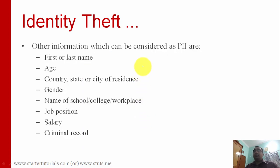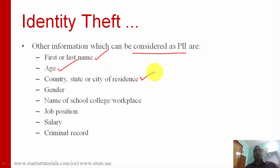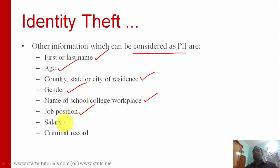There is also other information which can be considered as PII, such as first name or last name alone, age, country, state or place of residence, gender, name of school, college or workplace, job position, salary, and criminal record of the person.